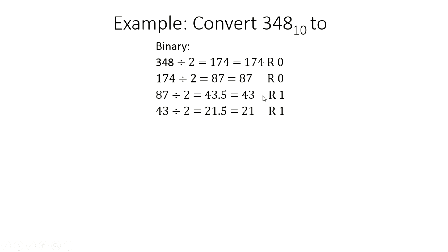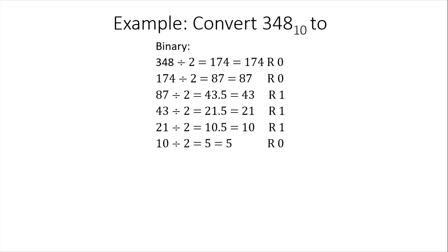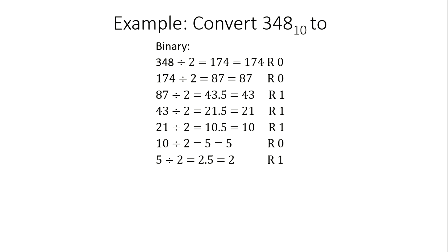43 divided by 2 is 21.5, which is equal to 21 remainder 1. Then, 21 divided by 2 is 10.5, so 10 remainder 1. 10 divided by 2 is 5, remainder 0. 5 divided by 2 is 2.5, or 2 remainder 1. 2 divided by 2 is 1, remainder 0.